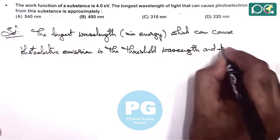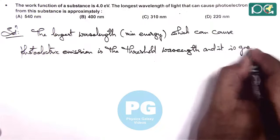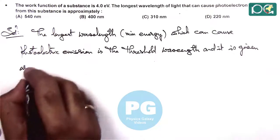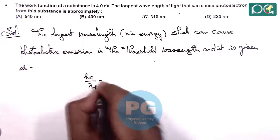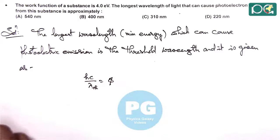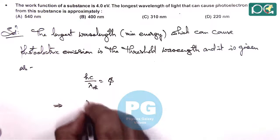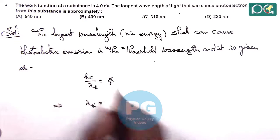And it is given as, we already discussed in theory, that threshold wavelength can be given as hc by lambda threshold is equal to phi which is the work function. So here lambda threshold we get is hc over phi.